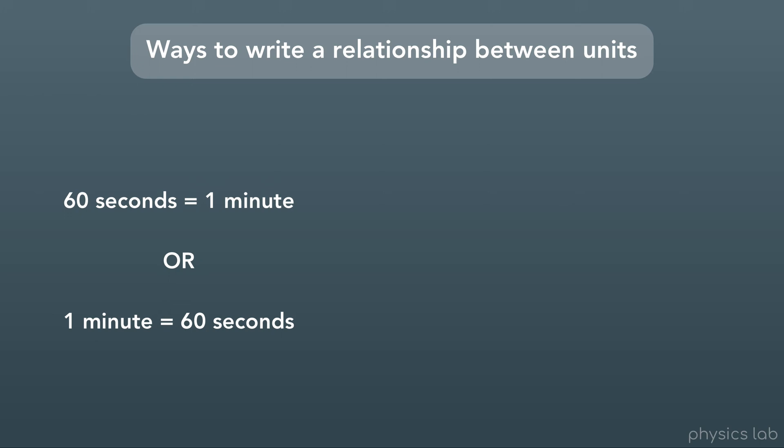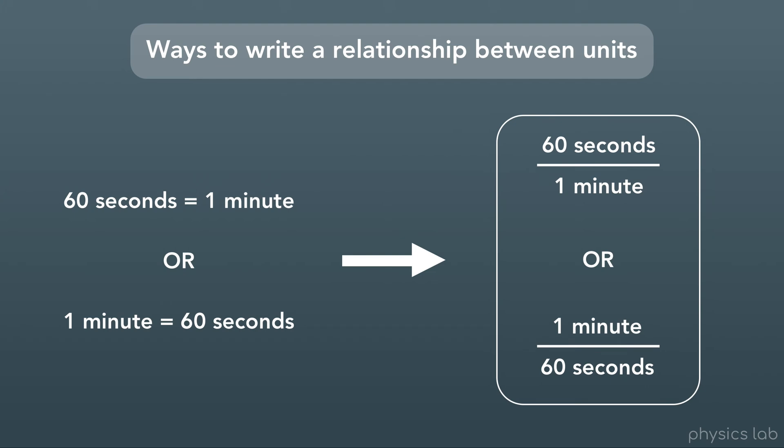But we're actually going to find it easier to write these relationships as fractions, like this. We could think of it as saying 60 seconds per minute, or 1 minute per 60 seconds. Both are saying the same thing.